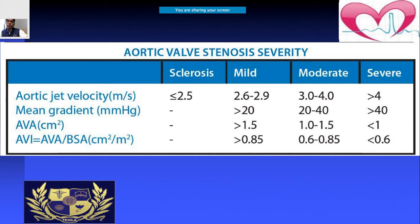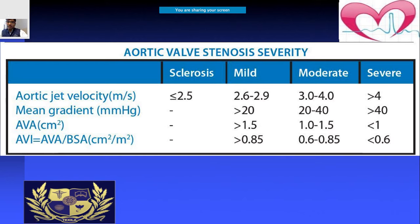Now coming to the aortic valve — aortic stenosis is quite common. You differentiate severity in terms of mild, moderate, and severe using the aortic valve area. It is called mild when the area is more than 1.5 cm², moderate when it is 1.0 to 1.5 cm², and severe when it is less than 1.0 cm².